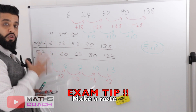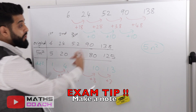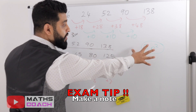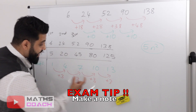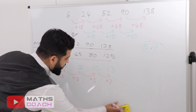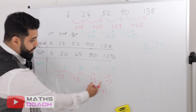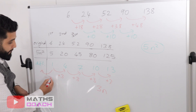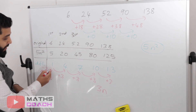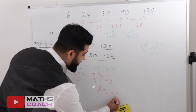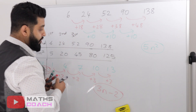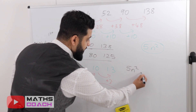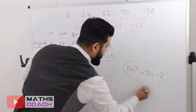A word of warning: if you're not getting the same difference each time in this step, something has gone wrong — go back to your calculations. Now write 3n because the difference is 3. Going backwards from the first term: 1 minus 3 is minus 2. So we add minus 2. Merging everything: 5n squared plus 3n minus 2.